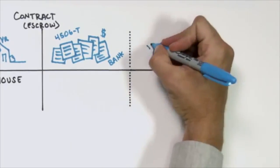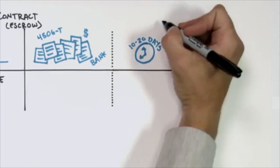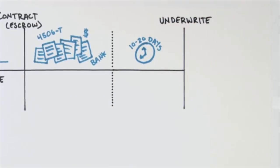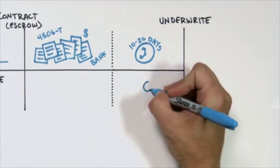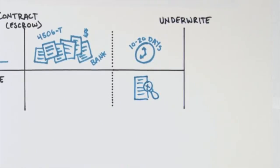And now 10 to 17, sometimes 20 days into the process, the underwriter, the person that actually has the authority to approve the loan, finally looks at the loan. What they find? They find the mistakes based on the loan officer's best guess.